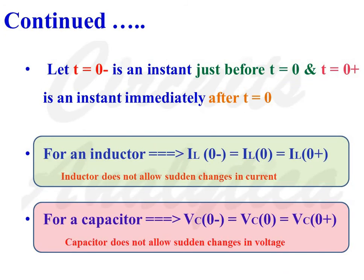Let T = 0⁻ be an instant just before T = 0, and T = 0⁺ be an instant immediately after T = 0. For an inductor, IL(0⁻) = IL(0) = IL(0⁺), meaning an inductor does not allow any sudden changes in current. In the case of a capacitor, Vc(0⁻) = Vc(0) = Vc(0⁺), meaning a capacitor does not allow any sudden changes in voltage.